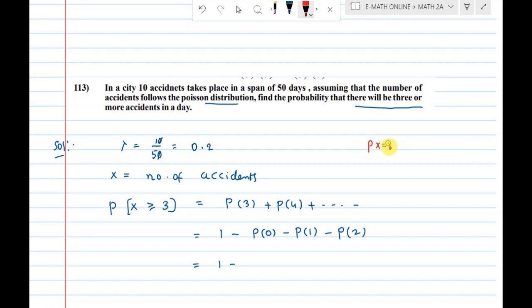The Poisson distribution formula: P of X equals R is equal to e power minus lambda times lambda power R by R factorial. We'll implement this formula.